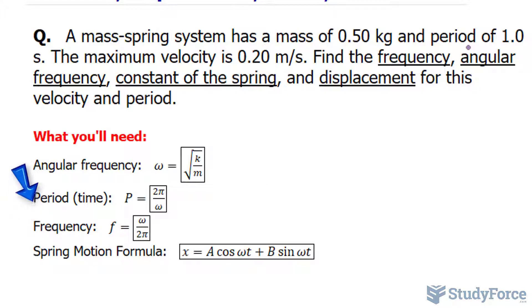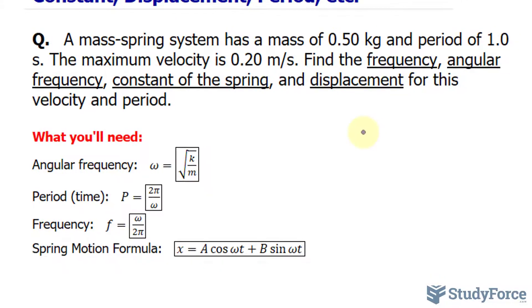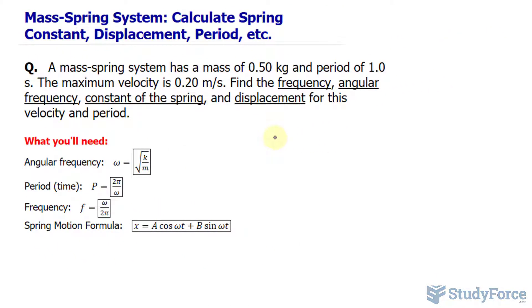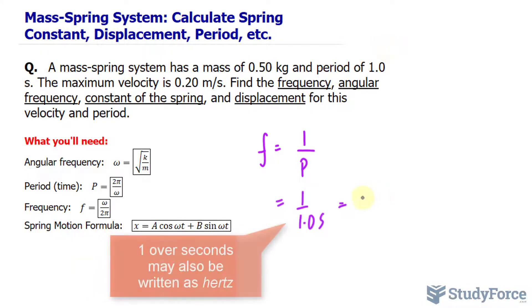For example, to find the frequency, you just take the period and reciprocate it, or take 1 divided by the period. To find the frequency, we write f equals 1 over the period, which we know to be 1.0 seconds. So we end up with a frequency equal to 1 per second.